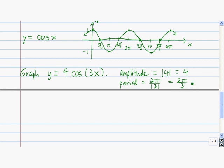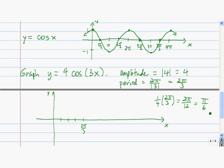The next thing we're going to do is mark off the value of the period. Then we break this interval up into four equal pieces, and the width of each of these pieces is one-fourth of the period, so that value is π over 6.